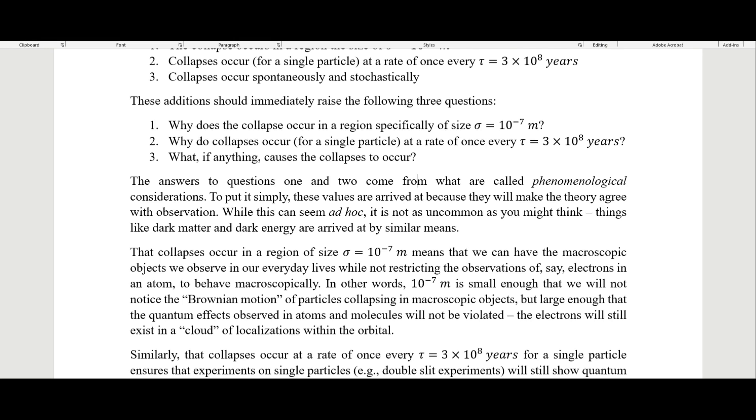Things like dark matter and dark energy are arrived at by similar means. For instance, we see that there is something going on with gravity out in the universe, and so they posit that there must be some kind of matter out there that we can't see and that we don't have any real theories of yet. That is a phenomenological consideration. Those are all theories that come from these phenomenological considerations.